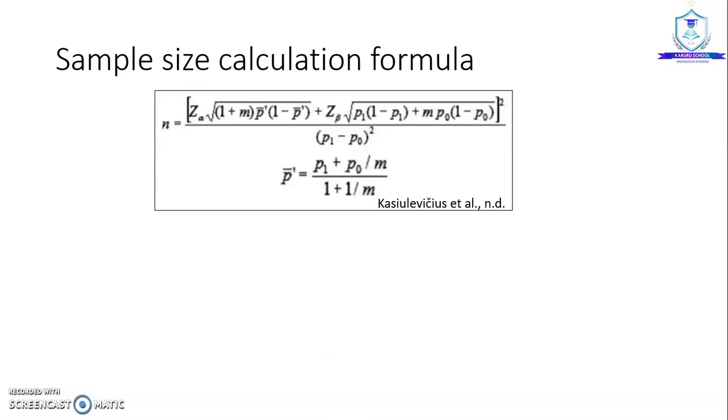To calculate the sample size, we need a formula. I did a thorough search in the publications and obtained this formula, which is straightforward, where n is the sample size. Z-alpha is the probability of obtaining the z-score at alpha, and then we have the z-score at beta. The probabilities of the exposure generating the outcome are p and p1.